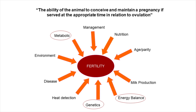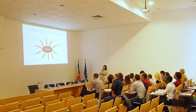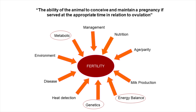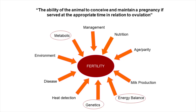The definition of fertility is the ability of the animal to conceive and maintain a pregnancy if served at the appropriate time in relation to ovulation. Thinking about fertility, there are many things impinging upon it: the reproductive side, genetics, diseases, management, and so on. I've circled three to discuss today: genetics, metabolic factors, and very closely linked with that, energy balance.